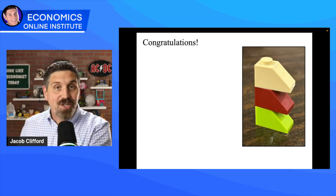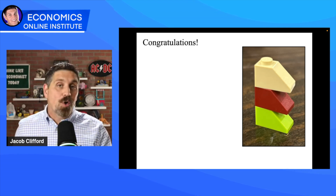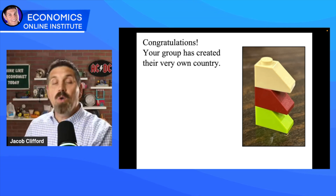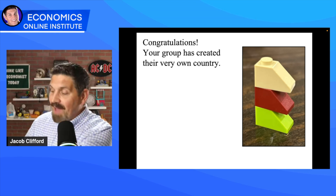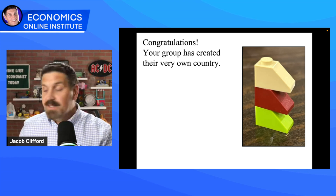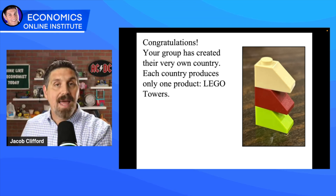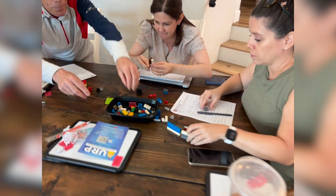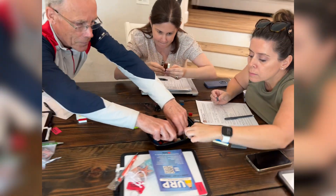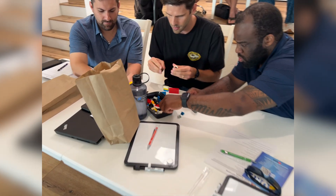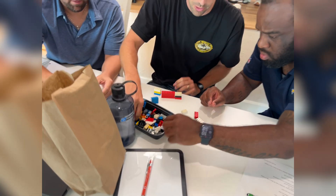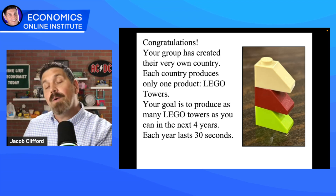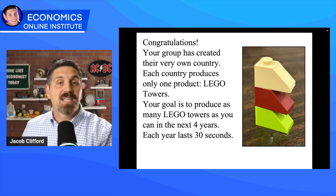You tell your students: congratulations, your group of three or four students have created your own country with your own economy. Every one of these countries is going to produce one product — Lego towers. Your goal is to produce as many Lego towers in each year as you possibly can. Each year lasts 30 seconds. There are only four years, and each tower in the beginning is going to be $10.